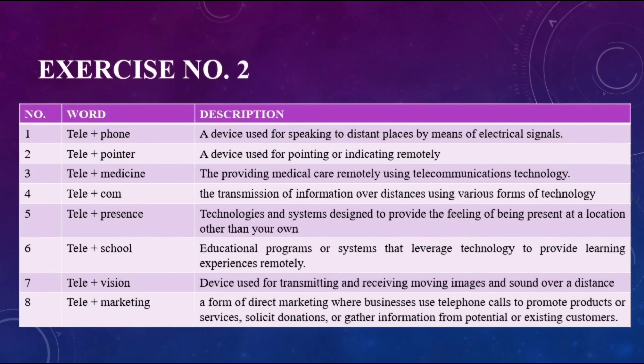In exercise number two, we have to make different words using the prefix 'tele' and their descriptions. The first word is 'telephone,' which means a device used for speaking to distant places by means of electrical signals. Number two, 'telepointer,' a device used for pointing or indicating remotely. Number three, 'telemedicine,' the providing of medical care remotely using telecommunications technology. Number four, 'telecom,' the transmission of information over distances using various forms of technology. Number five, 'telepresence,' technologies and systems designed to provide the feeling of being present at a location other than your own.